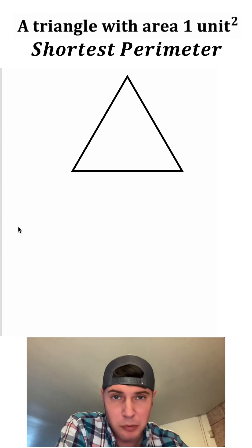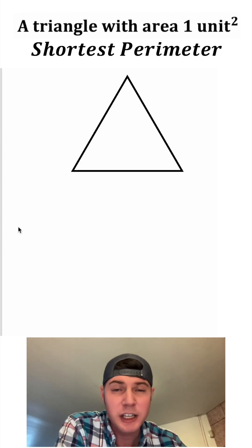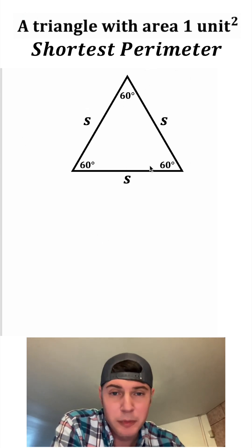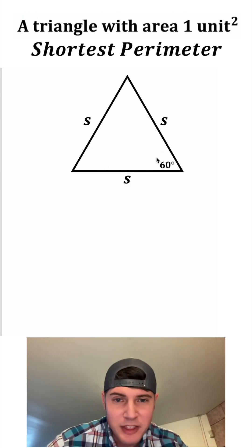So the way to get the shortest possible perimeter for a given area is to use an equilateral triangle. So here's our equilateral triangle right here and all the sides have the same length, S. And all three angles will be 60 degrees. And I wanna focus on this angle right here.